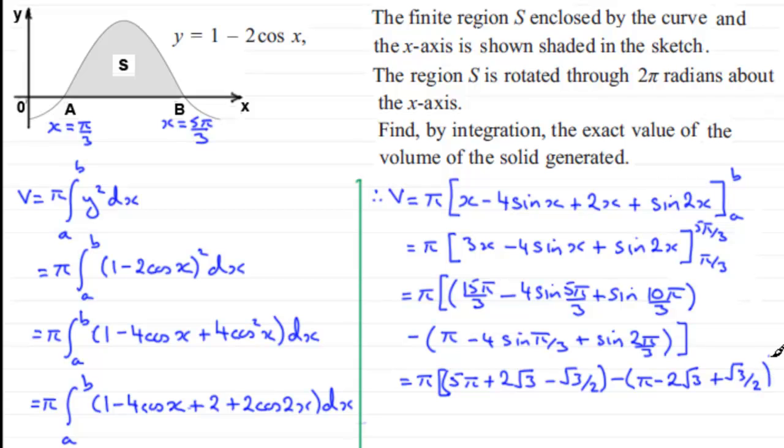So just close that off, and if we simplify this, it equals pi multiplied by 4 pi plus 3 root 3. And there's your answer. Although, being a volume, you might want to put units cubed. It's up to you whether you do that, but I just think it looks good if you do.